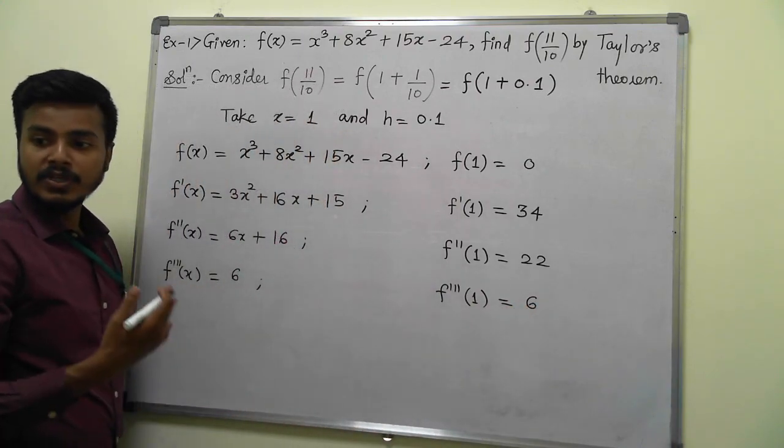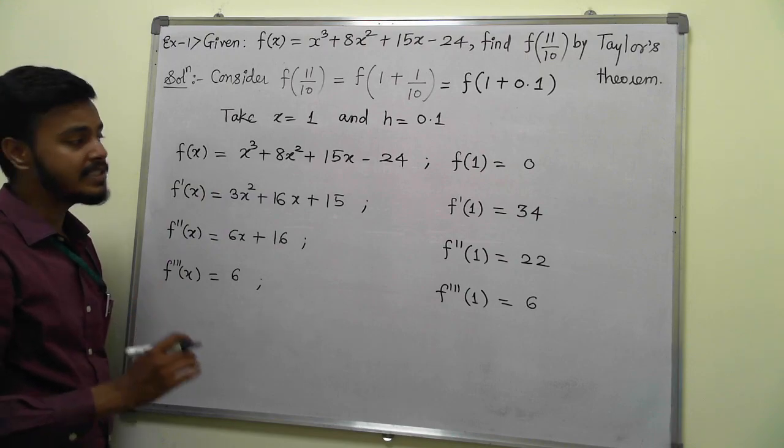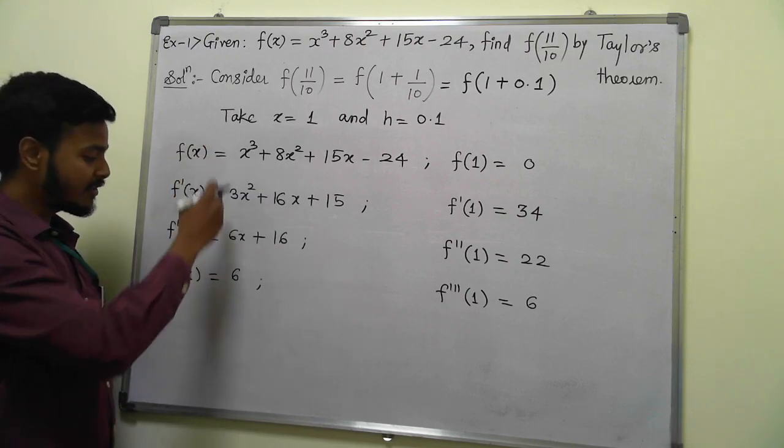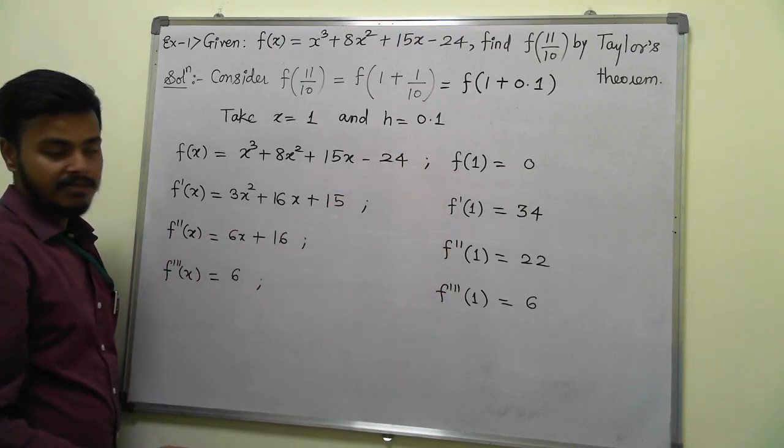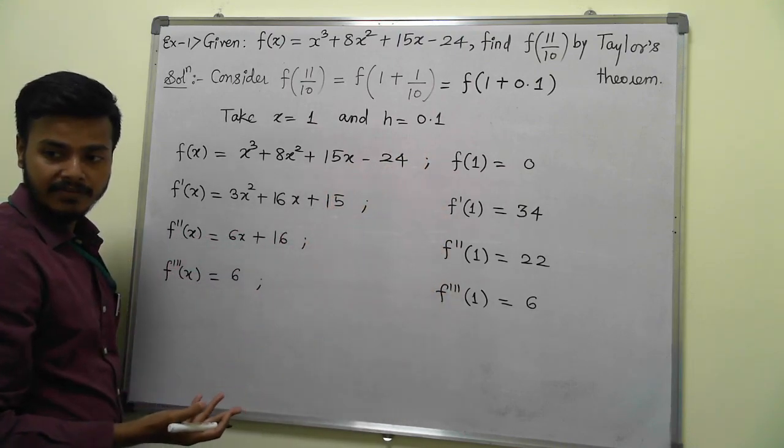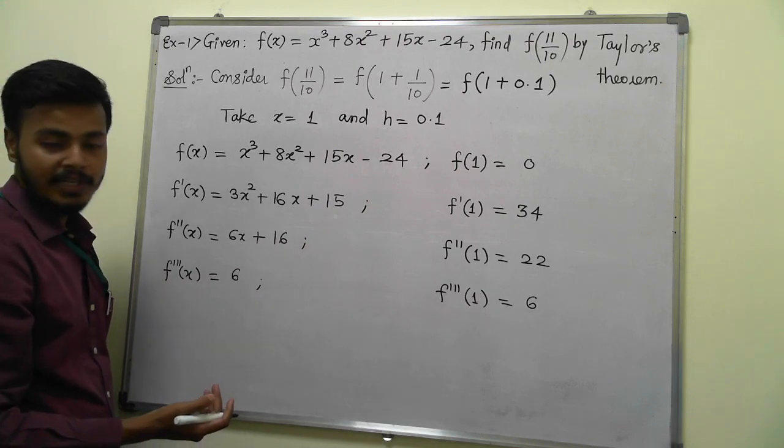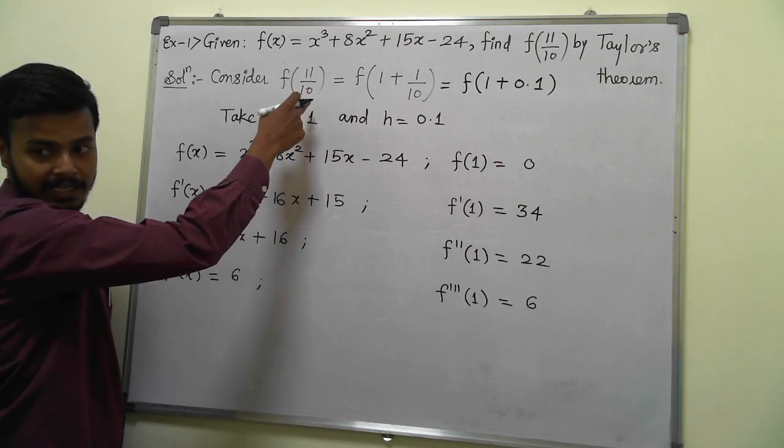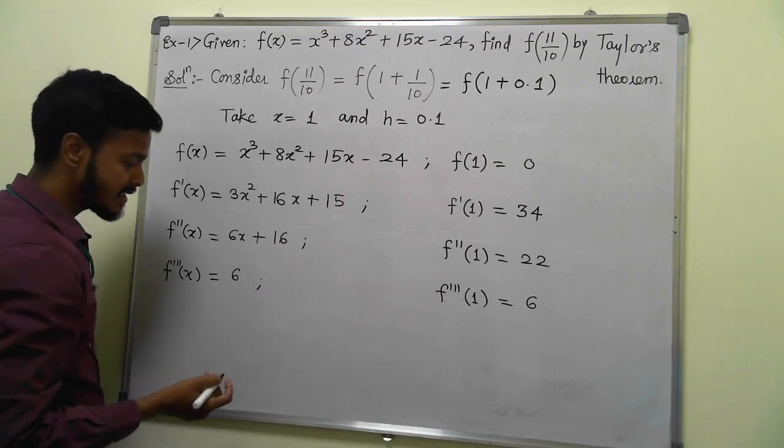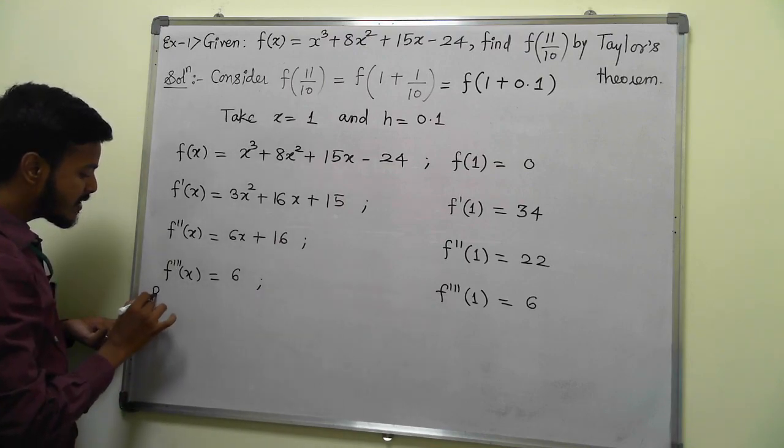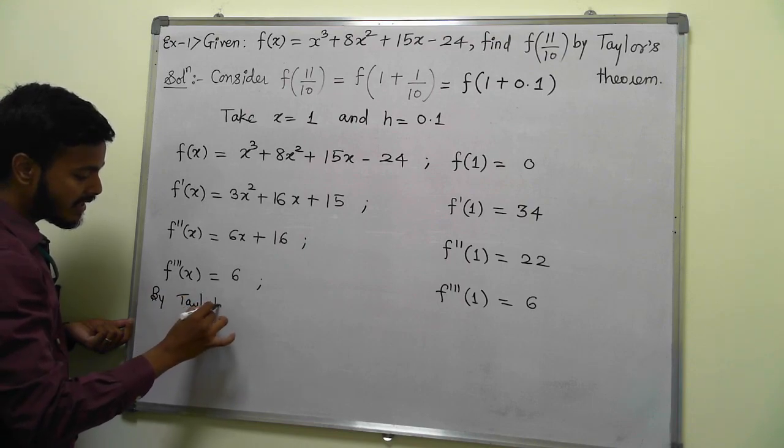Whenever you have a Taylor series problem, the first thing you do is write down the function, find 3 or 4 derivatives, and the corresponding value of the function at the point you have, depending on the problem. Now what do we have to find? f(11/10), which equals f(1 + 0.1), means apply the Taylor series expansion. By Taylor's theorem: